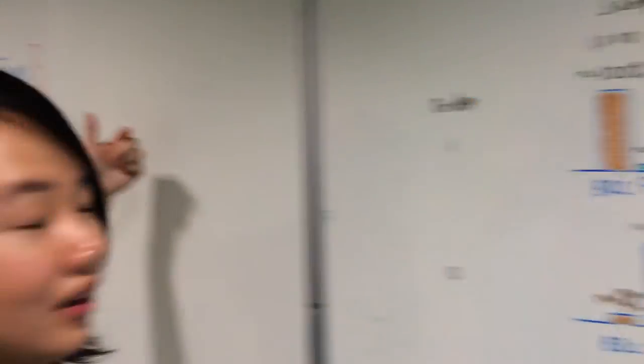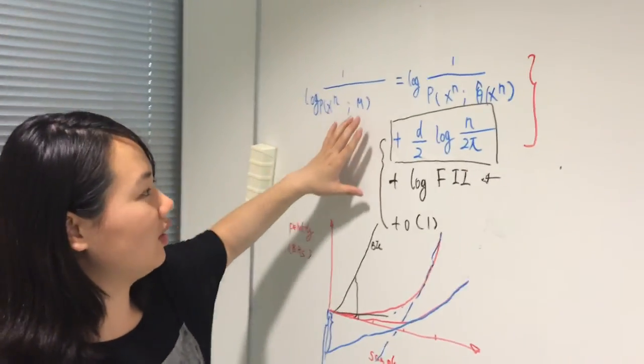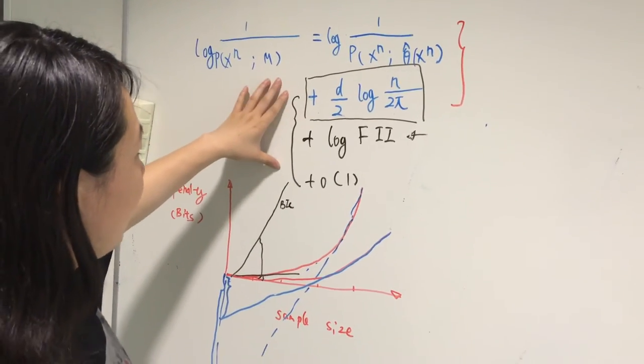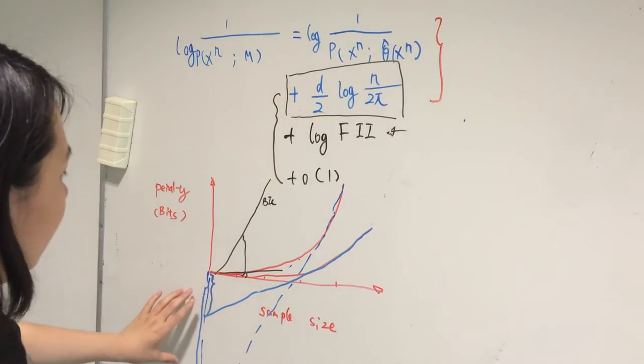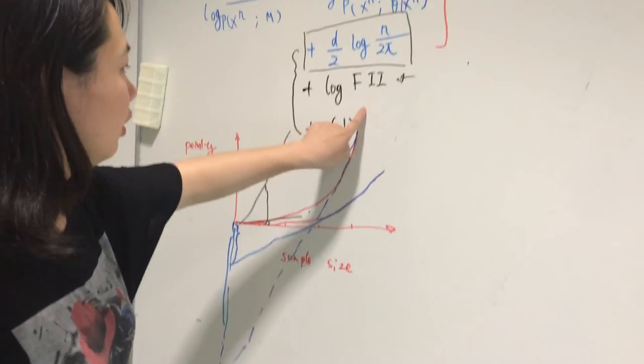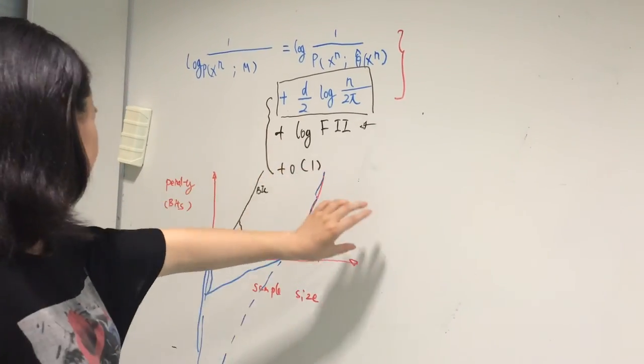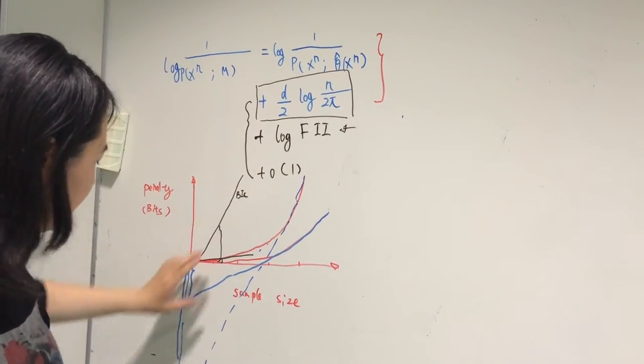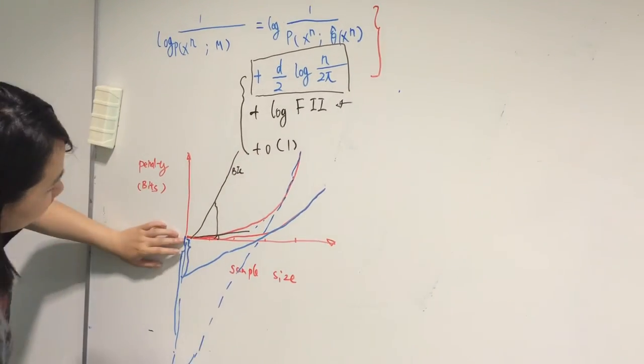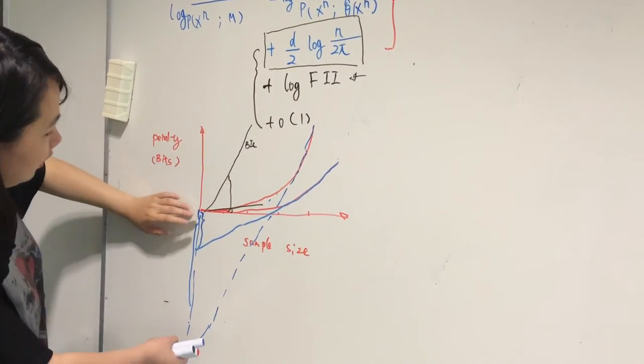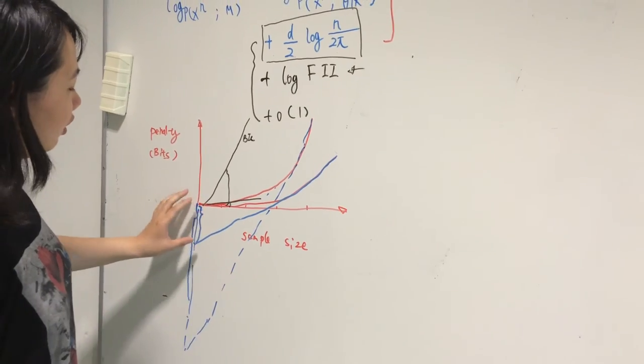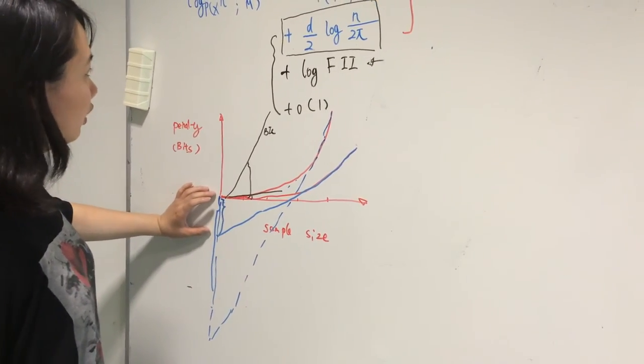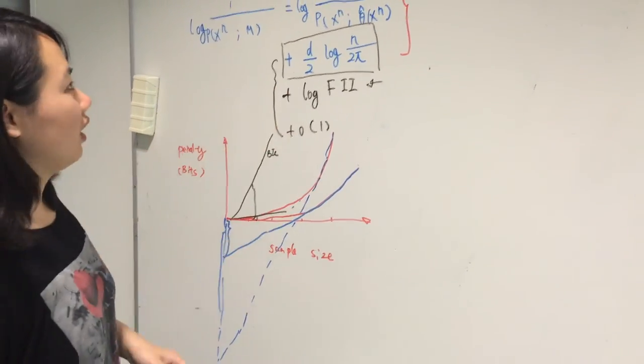To solve the problem of small sample size, let's go back to the FIA formula. And we can see that the small O(1) term depends on sample size and model complexity in the beginning. A further study of small O(1) term for small sample size is needed.